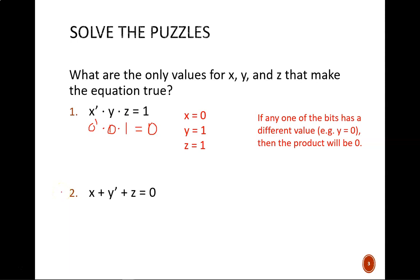Now take some time on the second puzzle, featuring the OR operation. What is the set of values that would cause this expression to equal 0? The only way to make this work is if x equals 0, y equals 1, and z equals 0.